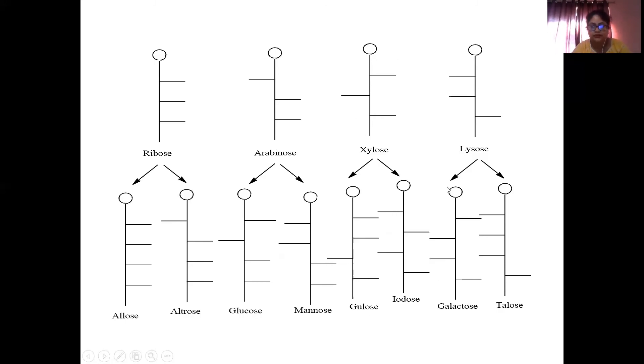And from lyxose we are getting galactose and talose. Now how to remember their names? There is also a trick: All altruists gladly make gum in gallon tanks. All for allose, altruist for altrose, gladly for glucose, make for mannose,